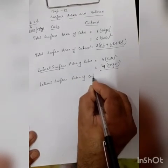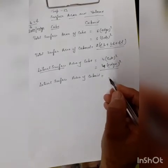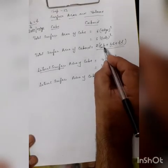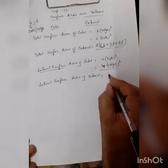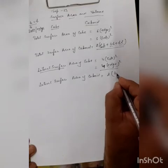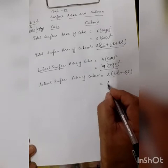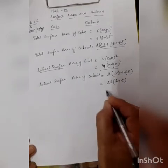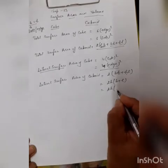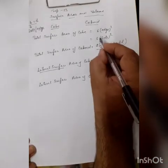Similarly, the lateral surface area of a cuboid: the top and bottom areas (lb) are removed, so we are left with 2 × (bh + hl). Taking h common, that gives us 2h(l + b), which is the formula for the lateral surface area of a cuboid.